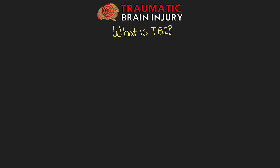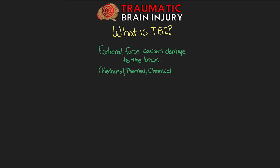Let's go ahead and start off talking about traumatic brain injury, or TBI. This is essentially when we have some sort of external force that's going to be causing damage to the brain. This can really be the result of many different types of forces — things from mechanical, thermal, chemical, electrical, even radiation can technically cause damage to the brain. But more often when we're talking about this, we're referring to the physical, mechanical forces, as these are going to be the most common type.